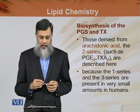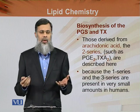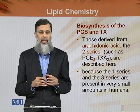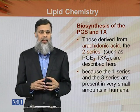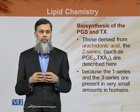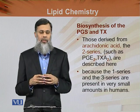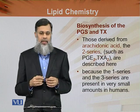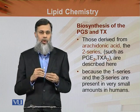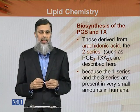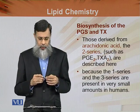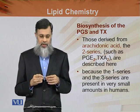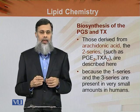Biosynthesis of prostaglandins and thromboxane: those derived from arachidonic acid are the two series, or the second series, including thromboxane A2 and prostaglandin E2. The one series includes PGE1 and thromboxane A1. Prostaglandin E2 falls in the second series, and similarly thromboxane A2 falls in the second series. Thromboxane A2 and prostaglandin E2 are described here in this module.